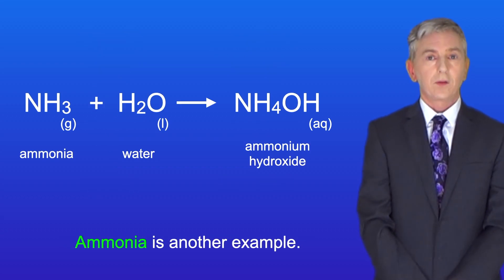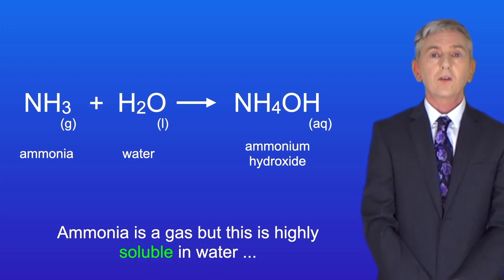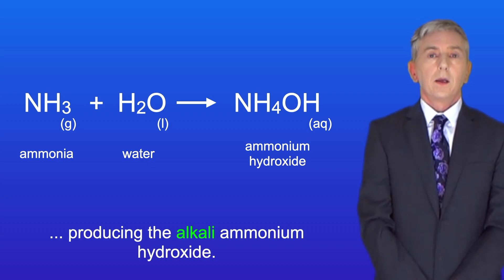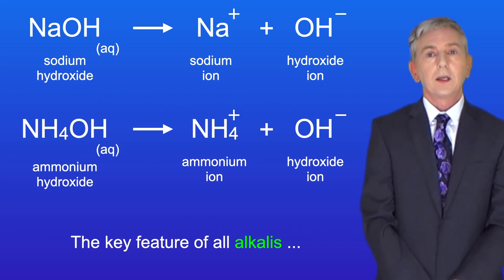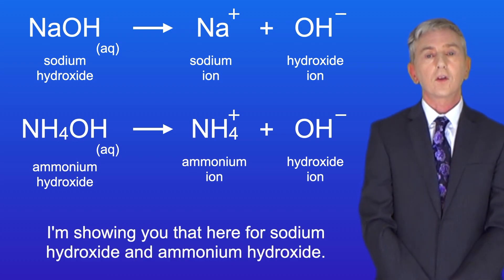Now ammonia is another example. Ammonia is a gas but this is highly soluble in water producing the alkali ammonium hydroxide. Now the key feature of all alkalis is that in solution they release the hydroxide ion OH- and I'm showing you that here for sodium hydroxide and ammonium hydroxide.